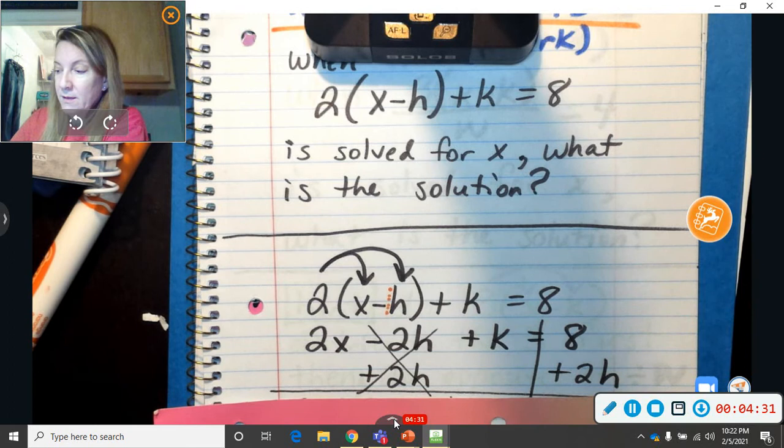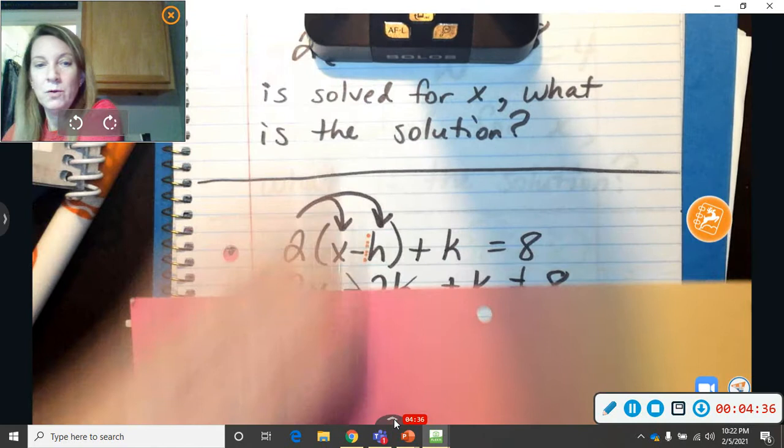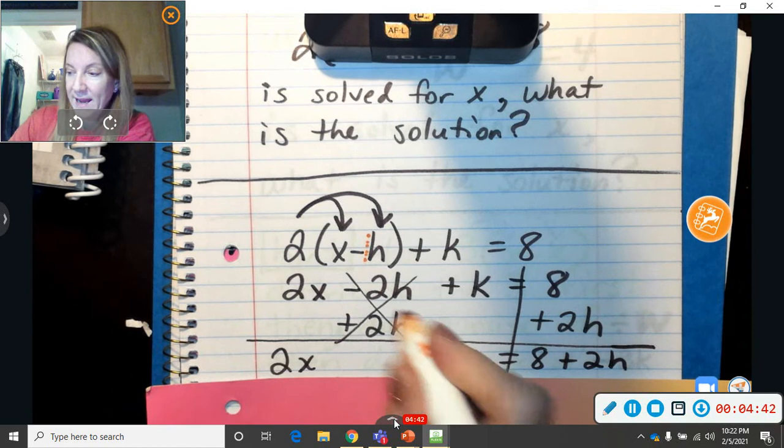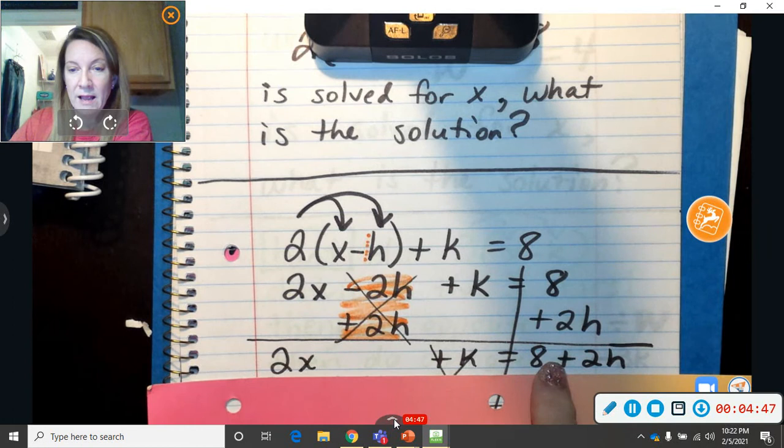You have to do it on both sides of the equal sign. Next, oh my dogs are going to start barking right in the middle of the video. Next, you got rid of those. In other words, they cancel each other out. They disappear. Remember, they're opposites. So you have 2x plus k equals 8 plus 2h.